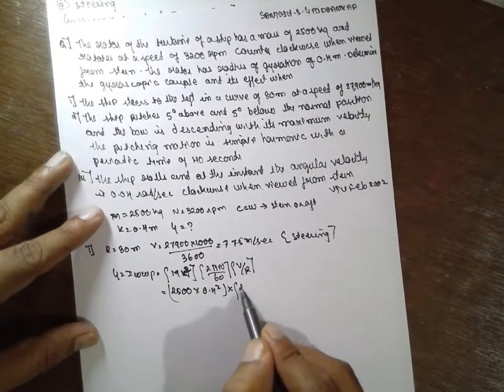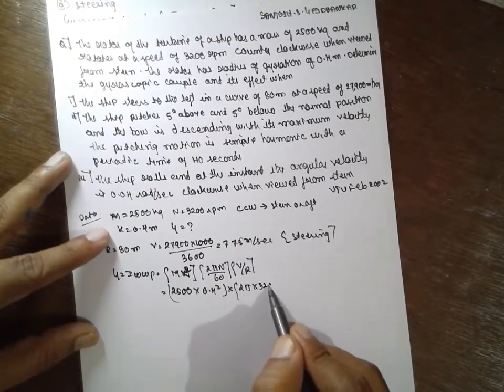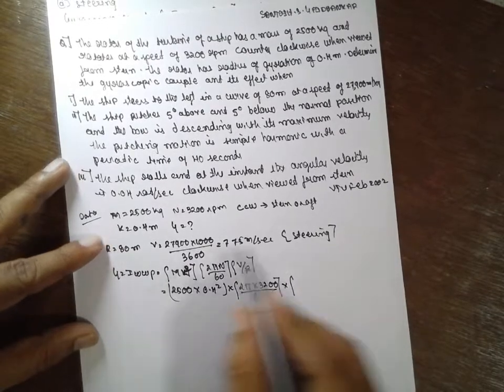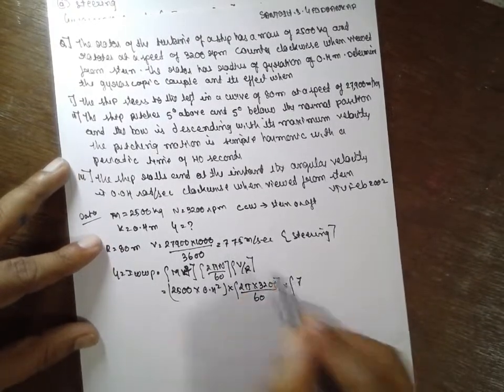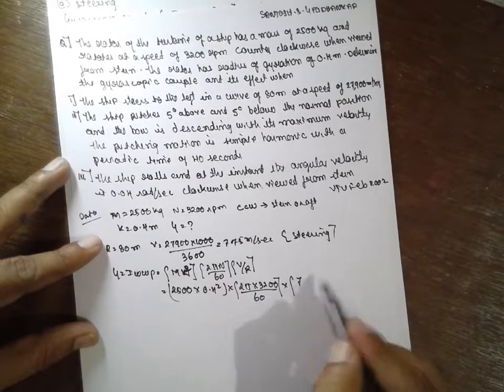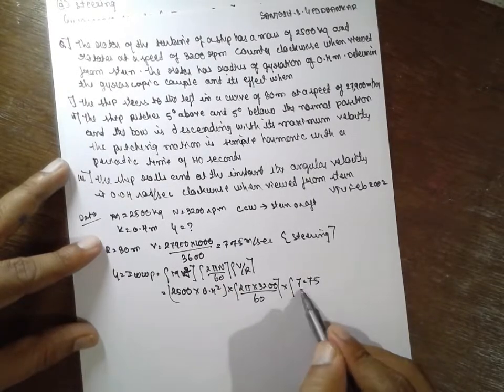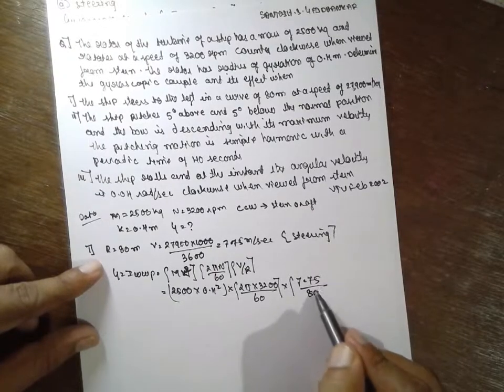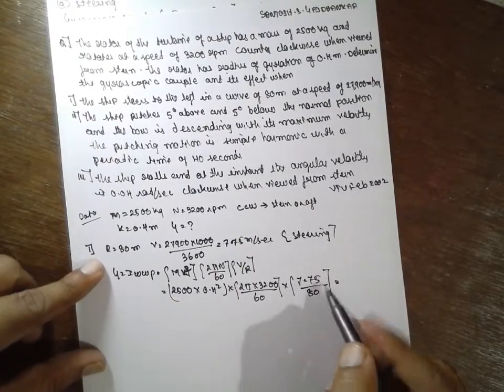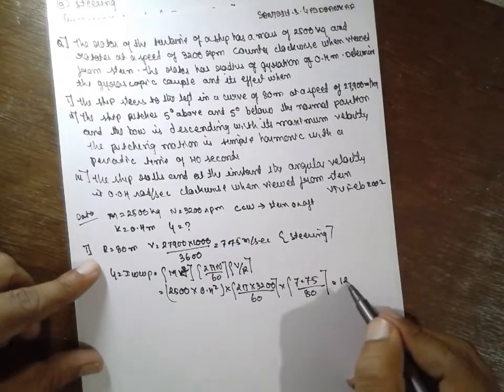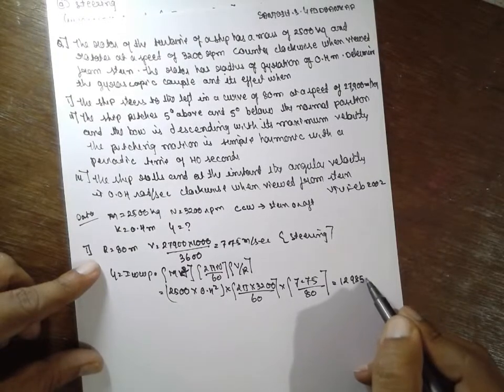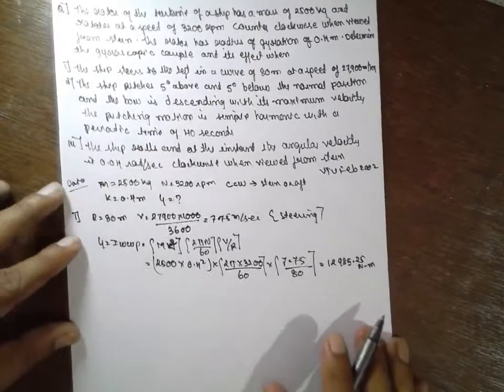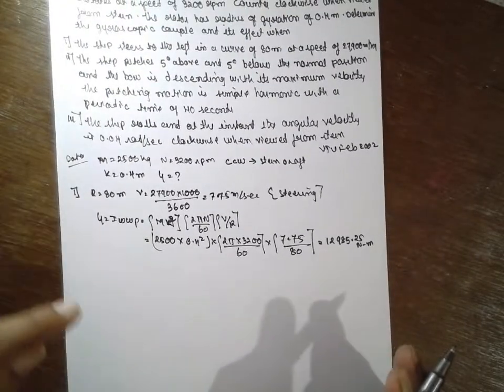The velocity will be 7.75 divided by R is 80. The value of mk square is 0.4. If you calculate, the answer will be 12985.25 Newton meter, this is the answer which is obtained.